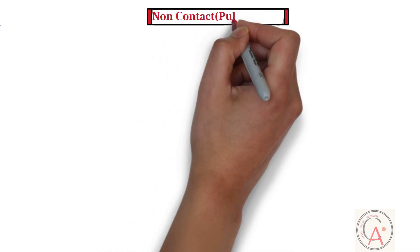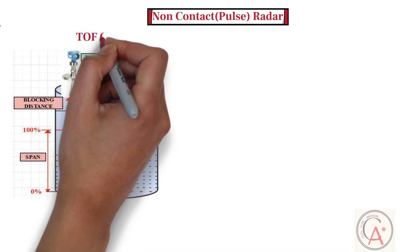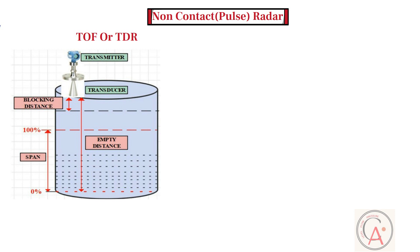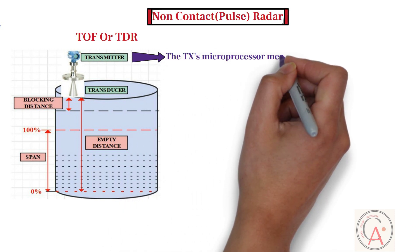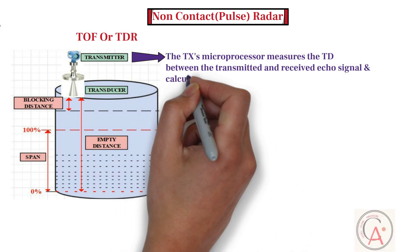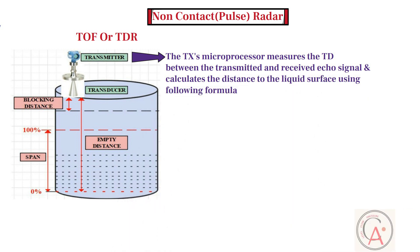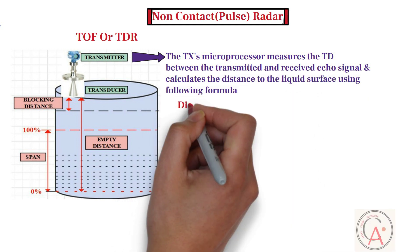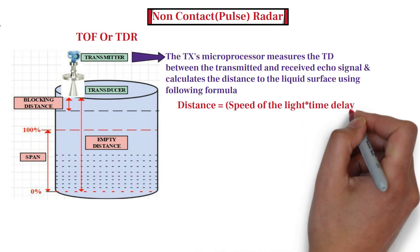Now I'm going to explain how non-contact type radar level transmitters work. Non-contact type radar level transmitters work on the time of flight measuring principle, also known as time domain reflectometry. This type of transmitter sends high-frequency radar pulses traveling at the speed of light towards the bottom of the tank, which bounce off the product's surface and return to the sensor. The transmitter's microprocessor measures the time delay between the transmitted and received echo signal and calculates the distance to the liquid surface using the formula: Distance = (Speed of Light × Time Delay) / 2.